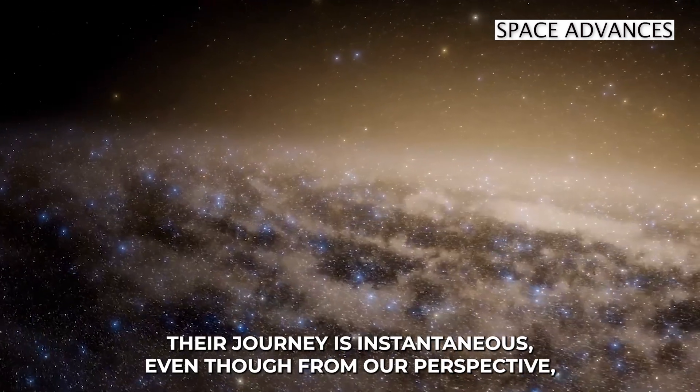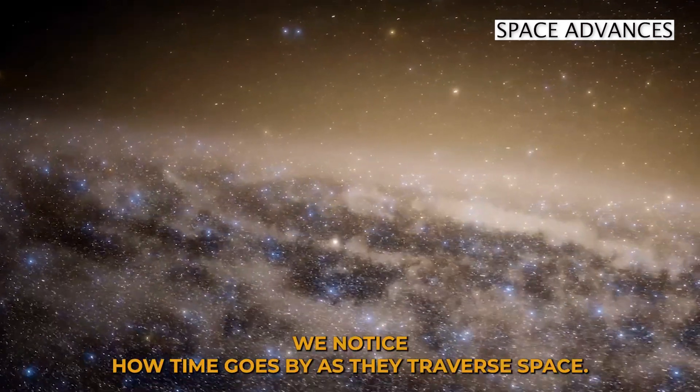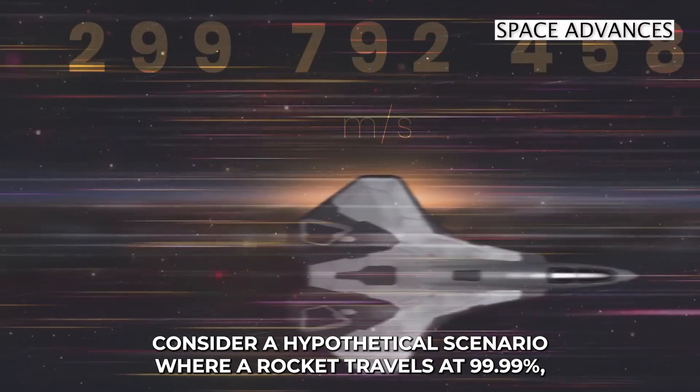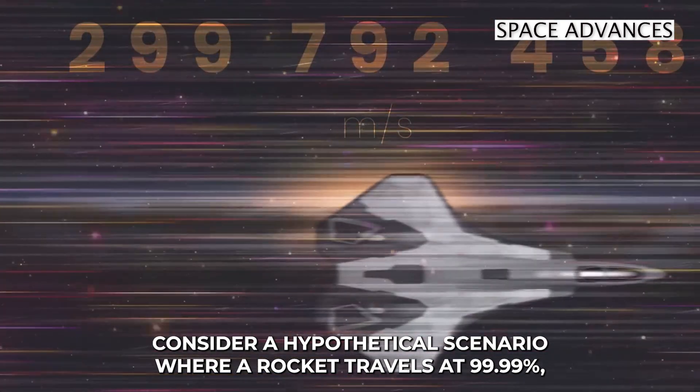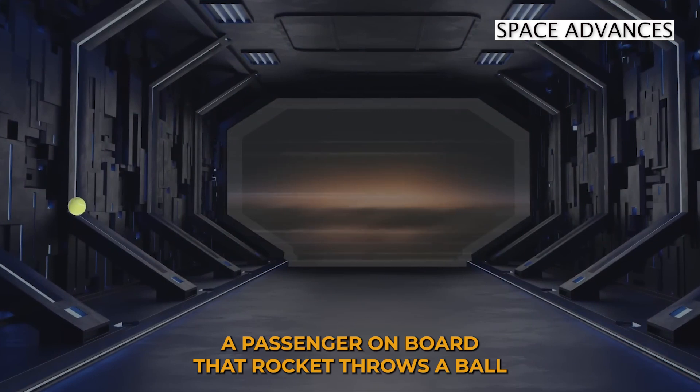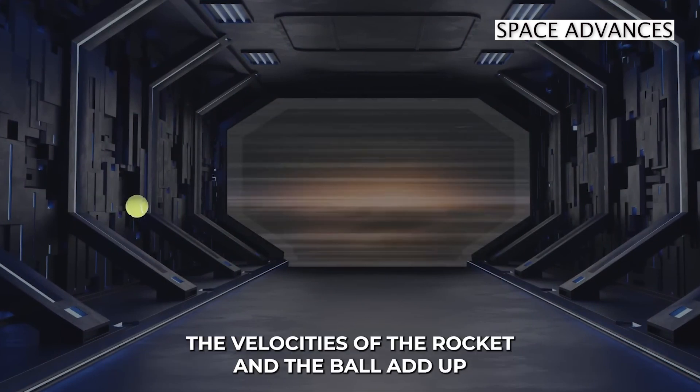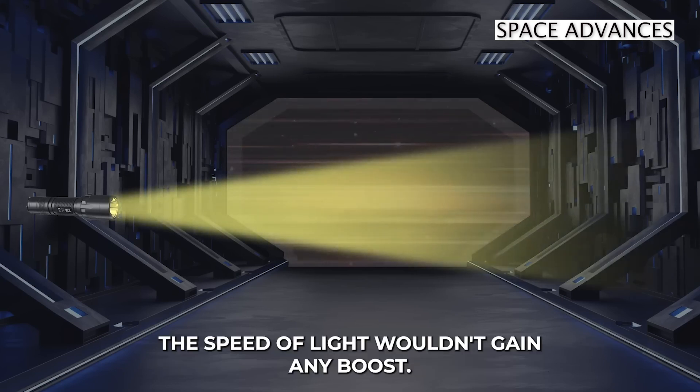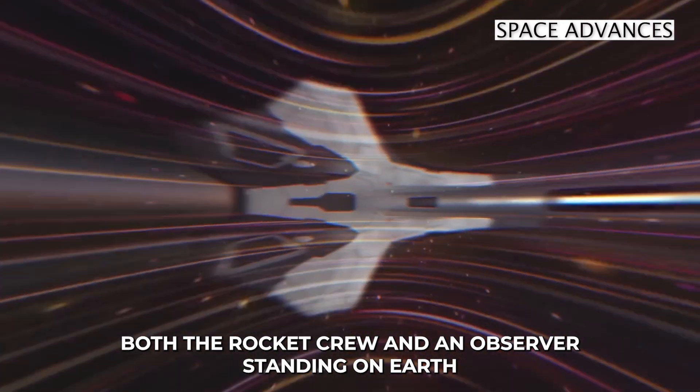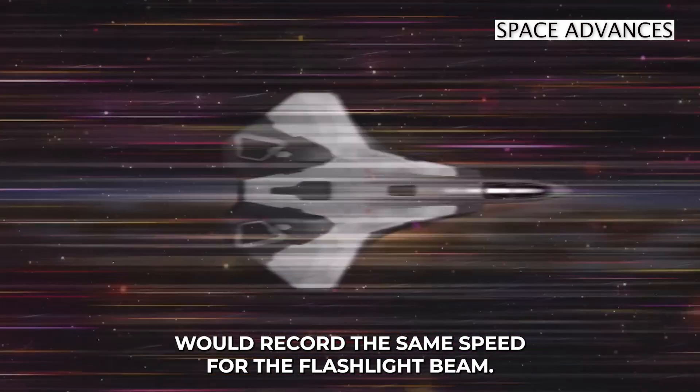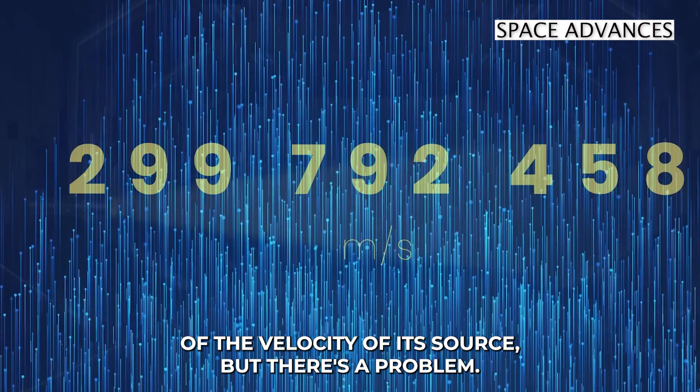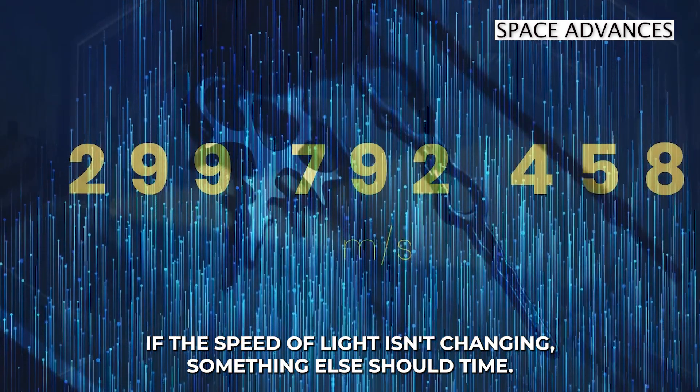Their journey is instantaneous, even though from our perspective, we notice how time goes by as they traverse space. How does this work? Consider a hypothetical scenario where a rocket travels at 99.99% the speed of light. A passenger on board that rocket throws a ball in the direction of the rocket's movement. The velocities of the rocket and the ball add up, something we would expect from classical Newtonian physics. But if the passenger switched on a flashlight instead, the speed of light wouldn't gain any boost. Both the rocket crew and an observer standing on Earth would record the same speed for the flashlight's beam, since this speed is constant and independent of the velocity of its source. But there's a problem. If the speed of light isn't changing, something else should. Time.